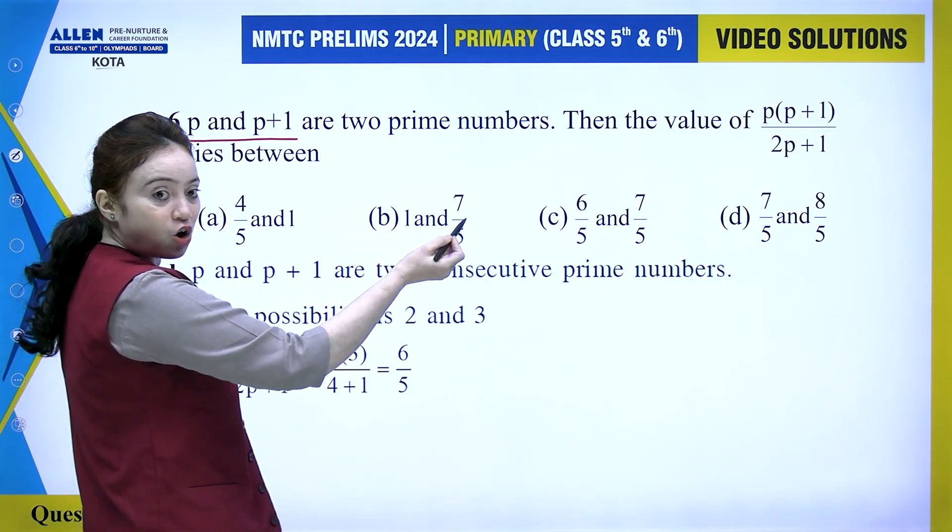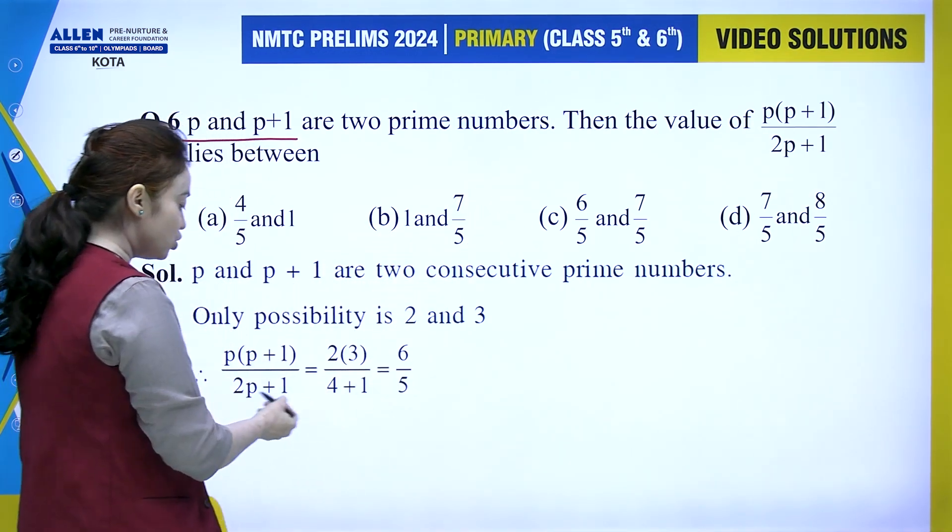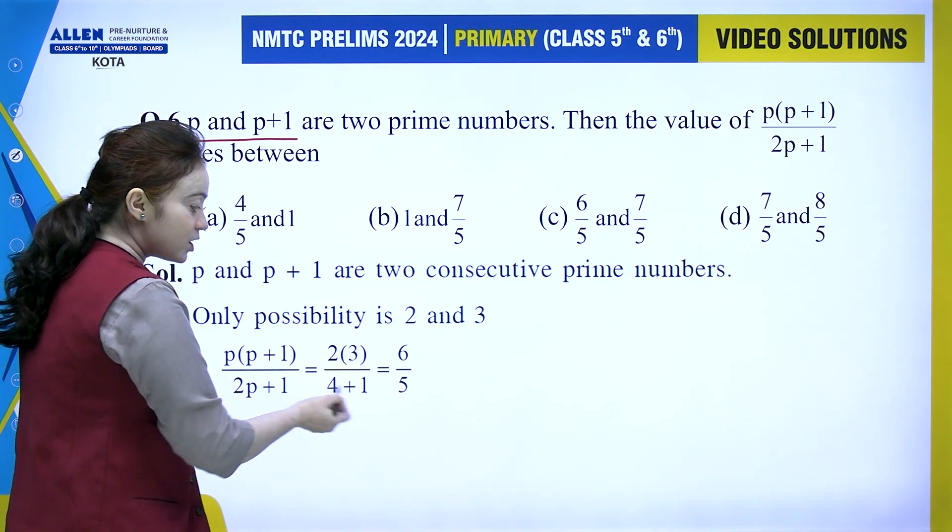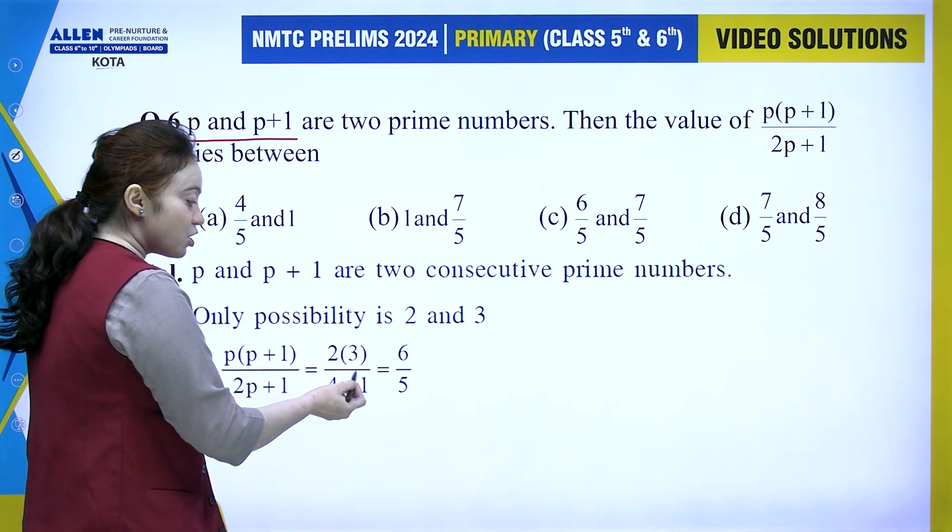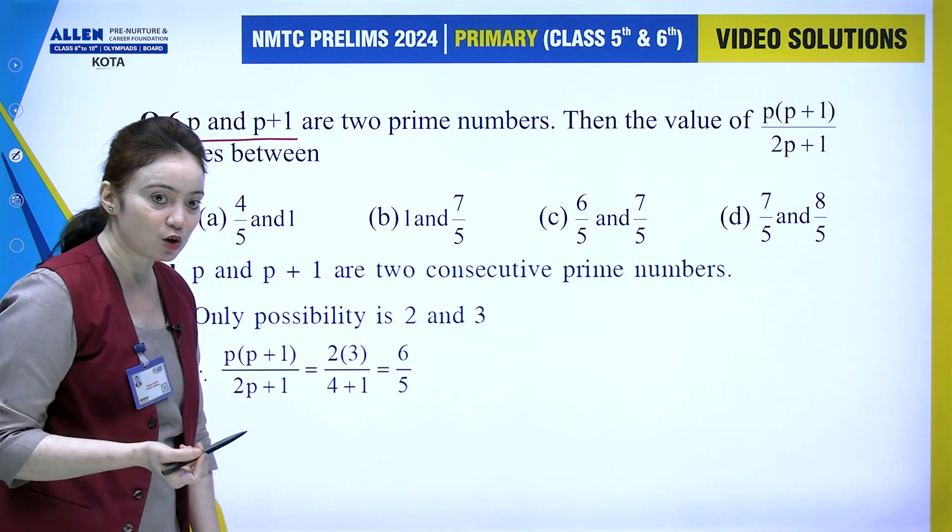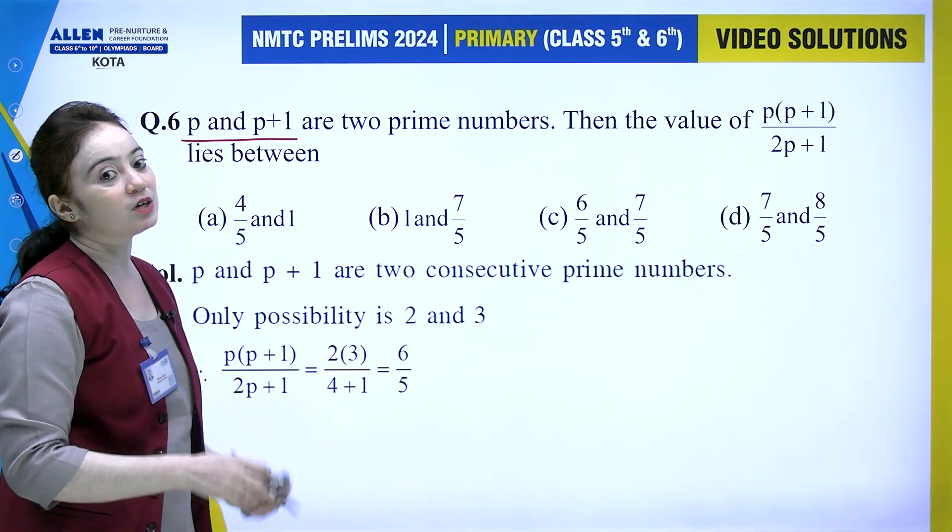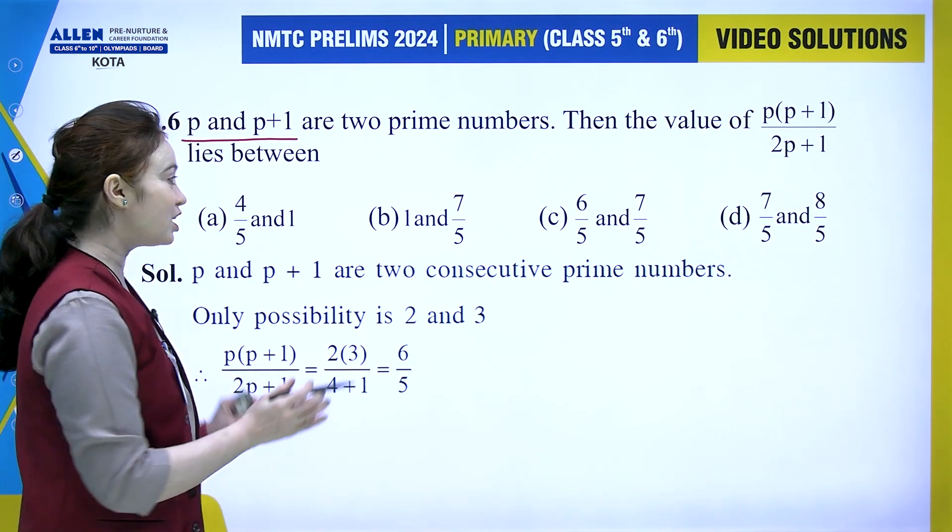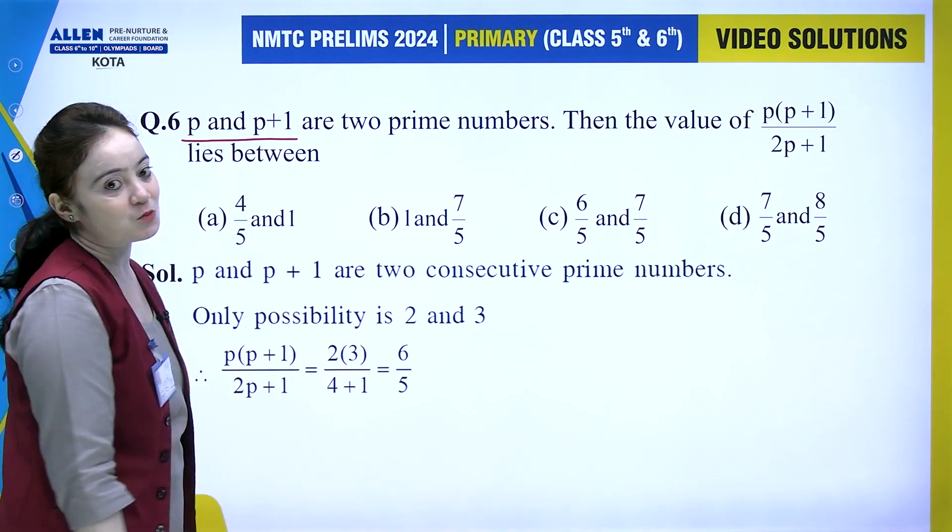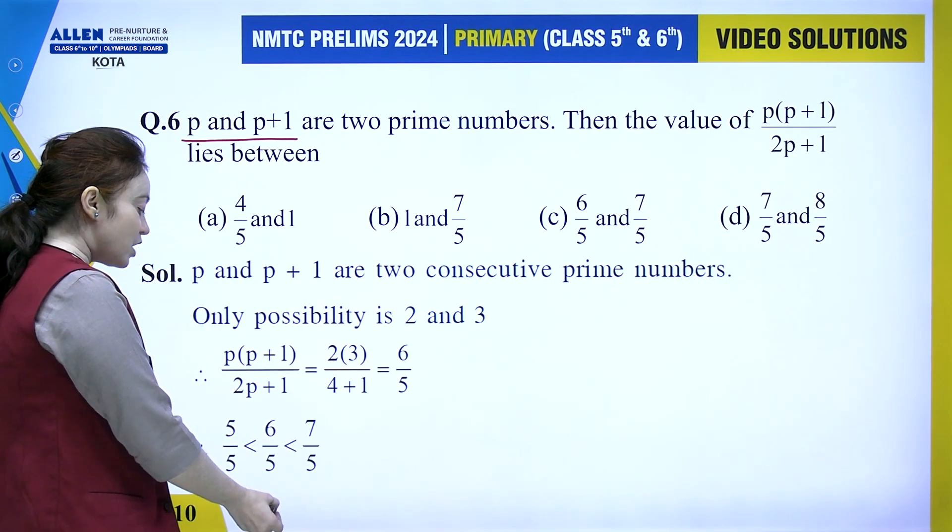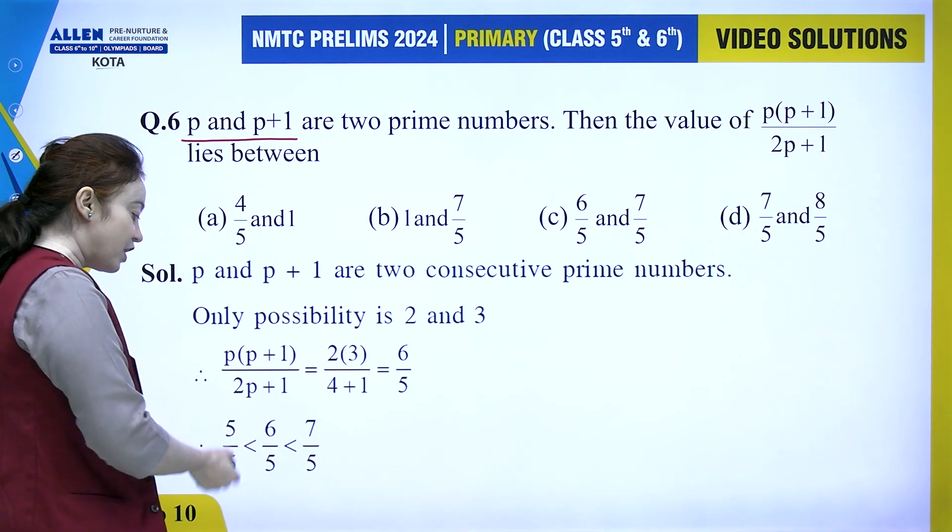In the denominator 2 into P is 2 into 2, which is 4, plus 1 equals 5. The numerator is 6 and denominator is 5. Now they haven't directly asked the value, they've asked where this number lies between.